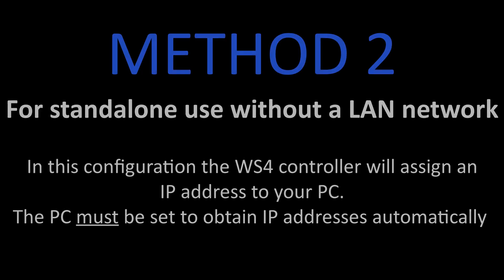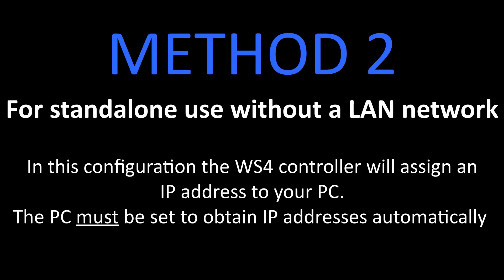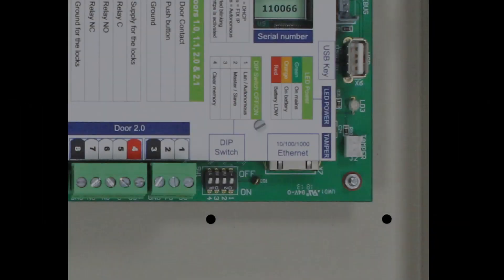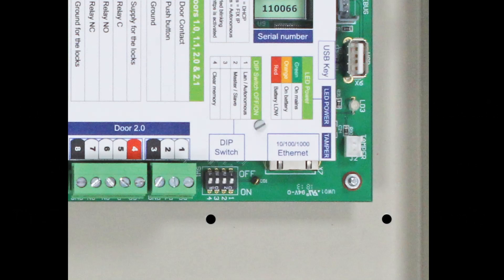Method 2 is for standalone use without a local area network. In this configuration, the WS4 controller will assign an IP address to your PC. The PC must be set to obtain IP addresses automatically. First, put DIP switch 1 in the on position.